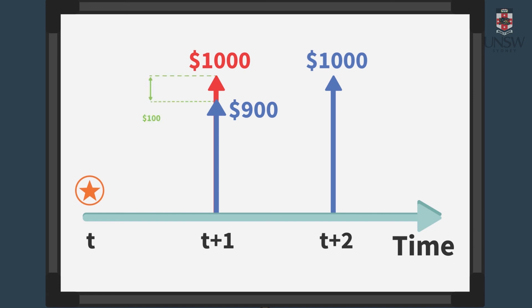The difference of $100 between the red and blue arrows at time t plus one is the time value of money — the one-year time value of $900 between time t plus one and t plus two.